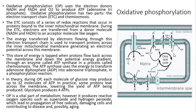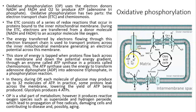This store of energy is tapped when protons flow back across the membrane and down the potential energy gradient through an enzyme called ATP synthase in a process called chemiosmosis. The higher concentration of hydrogen between the membranes causes them to flow through the ATP synthase, and this energy is used to transform ADP plus phosphate into ATP.